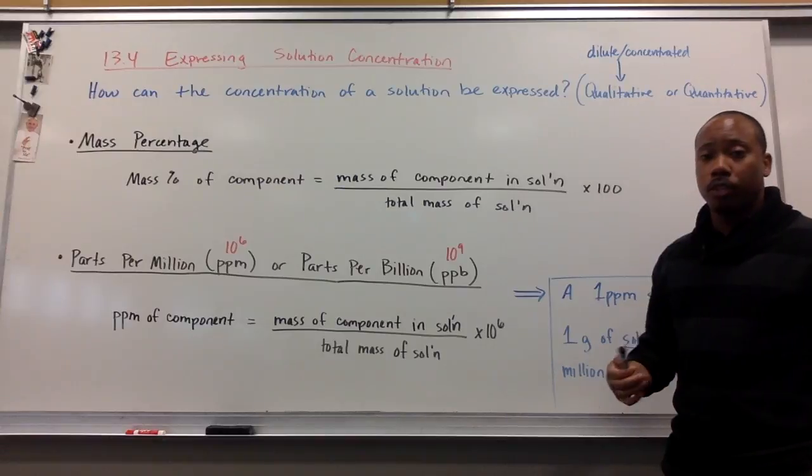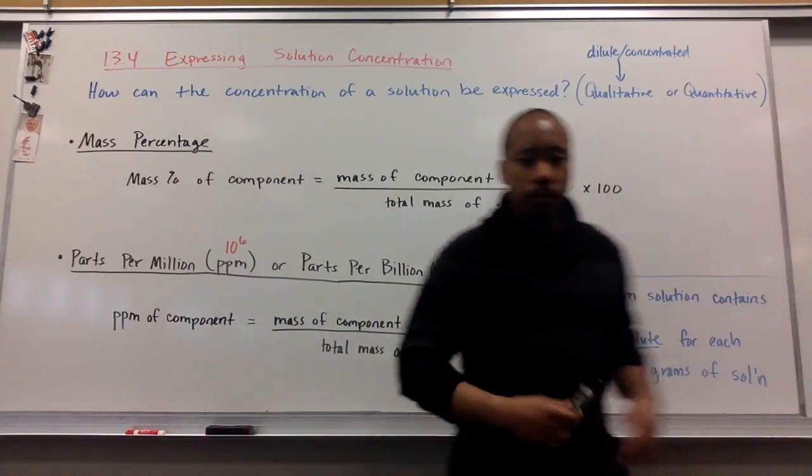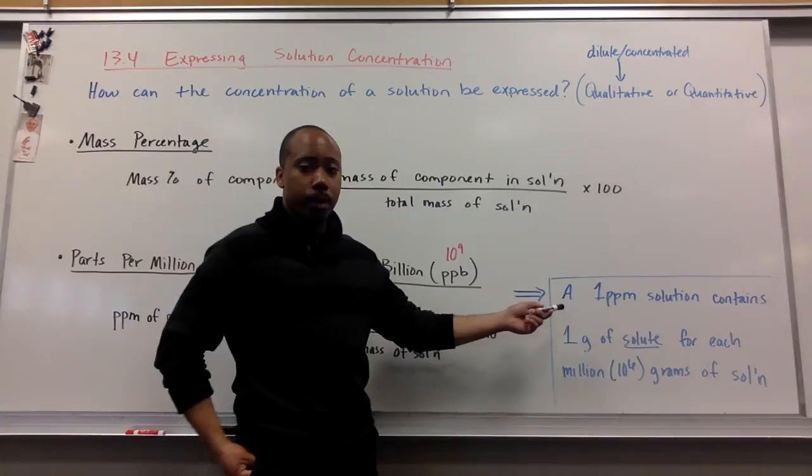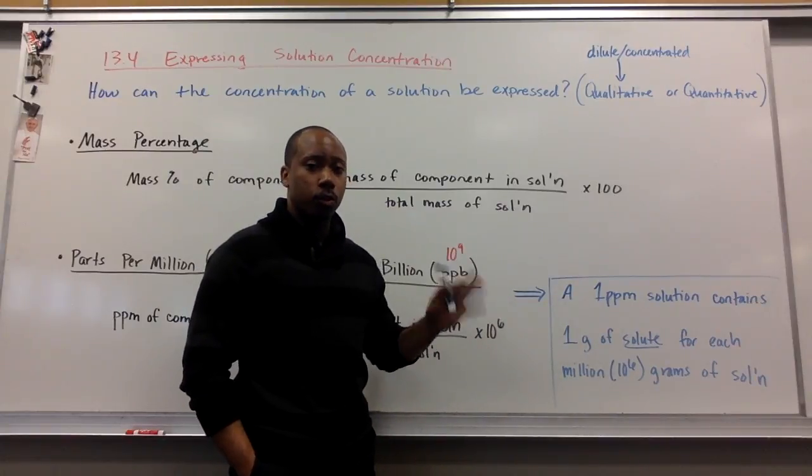If it was parts per billion, you multiply times 10 to the 9th. Now, a little bit about parts per million. This also applies to parts per billion. Just substitute one number.